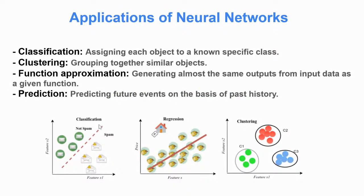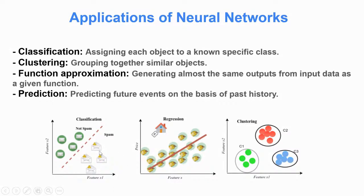A neural network is a very important concept in artificial intelligence. They have been around for many years — they are not new — but they have been recently used in the last 10 years because of many changes in the computing scene. The main applications for a neural network include classification, where we assign each object to a known specific class. For example, we can classify an email as spam or not spam — we know in advance what the classes are, and we separate non-spam from spam emails.